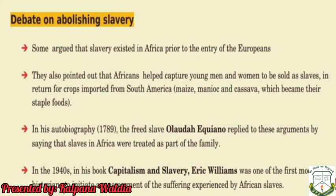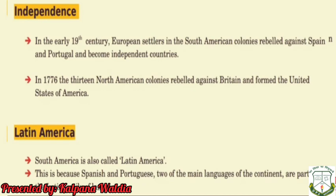Some argued that slavery existed in Africa prior to the entry of Europeans, and also pointed out that Africans helped capture young men and women to be sold as slaves, in return for crops imported from South America. In one biography it is written that slaves were treated as part of the family. In the book 'Capitalism and Slavery,' Eric Williams, a popular modern historian, initiated a reassessment of the suffering experienced by the slaves.